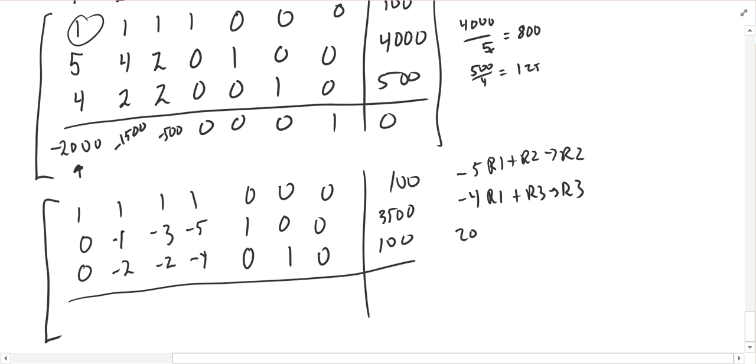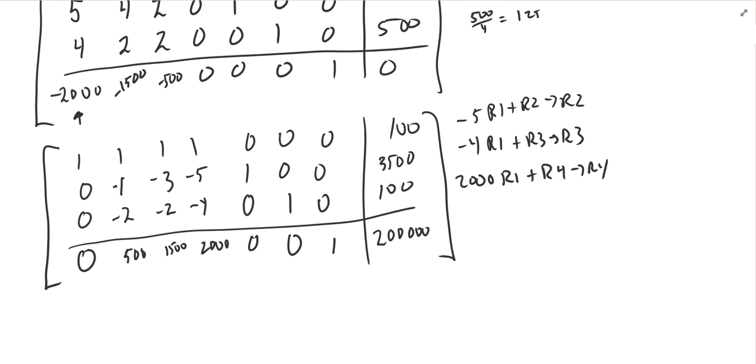And then I want to do 2,000 times row 1 plus row 4 and put it into row 4's spot to create a 0 down here in this first column. So I'm going to have positive 2,000 and a positive 2,000 is 0. 2,000 plus negative 1,500 is 500. 2,000 plus negative 500 is 1,500. 2,000 plus 0 is 2,000. 0 plus 0 is 0. 0 plus 0 is 0. 0 plus 1 is 1. And 2,000 times 100 is 200,000. And it looks like I have reached my maximum because all the numbers in the bottom row are positive.